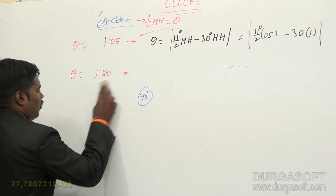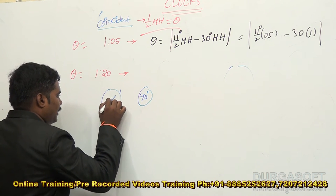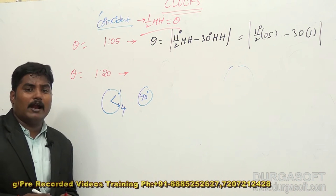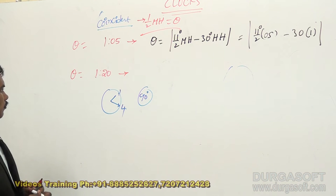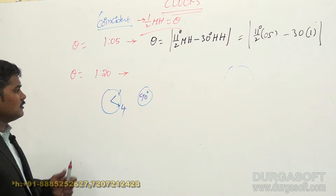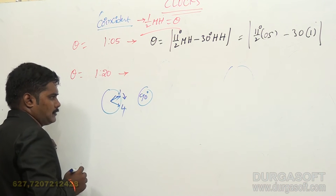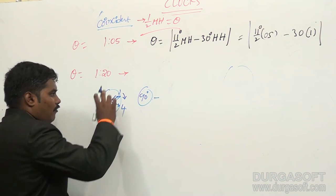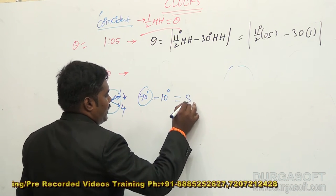From 1 o'clock, the hour hand moves in 20 minutes. In 1 minute the hour hand covers half a degree, so in 20 minutes it covers 10 degrees. The hour hand moves towards the minute hand direction — that means it decreases the angle. Initially between 1 and 4 you have 90 degrees. In 20 minutes the hour hand decreases the angle by 10 degrees. So you get the answer as 80 degrees.